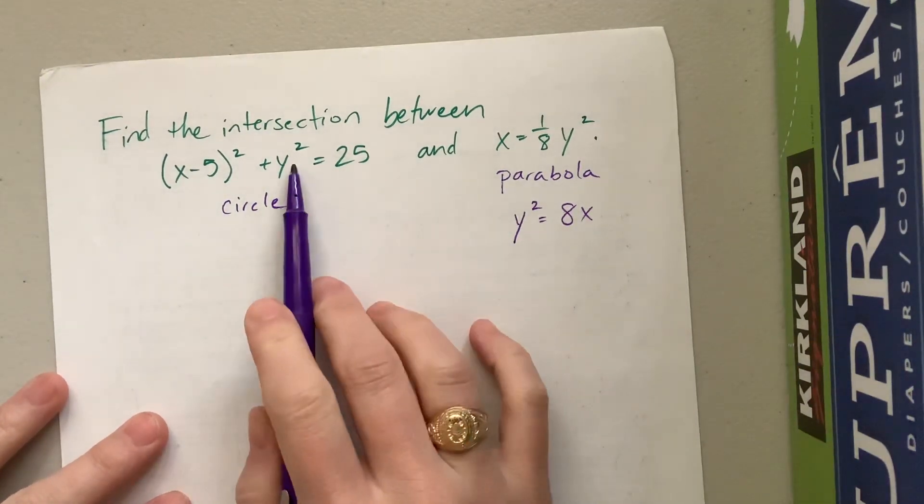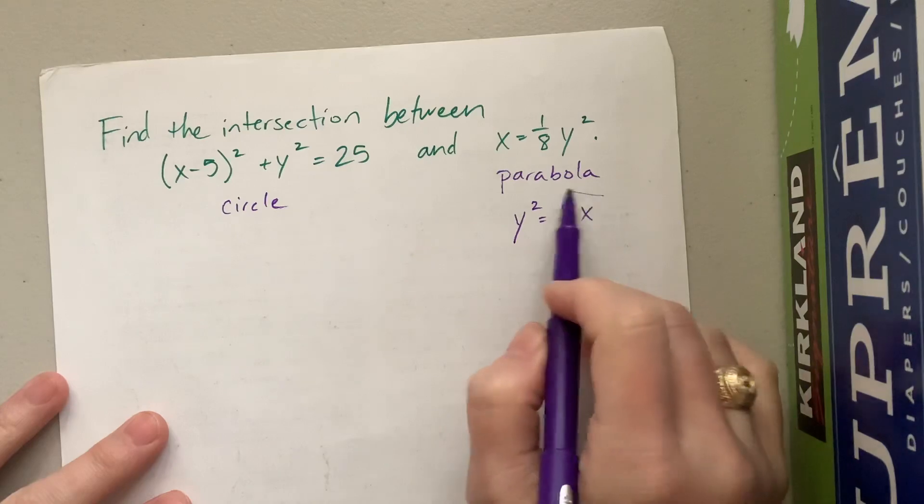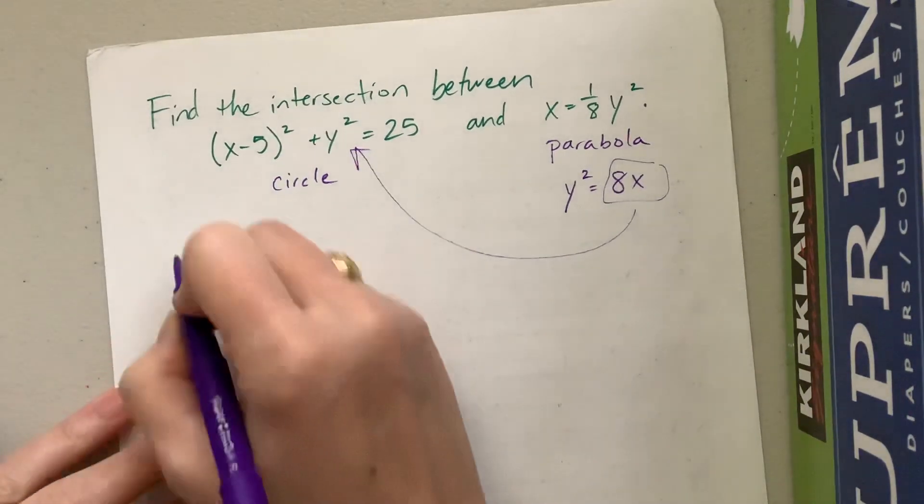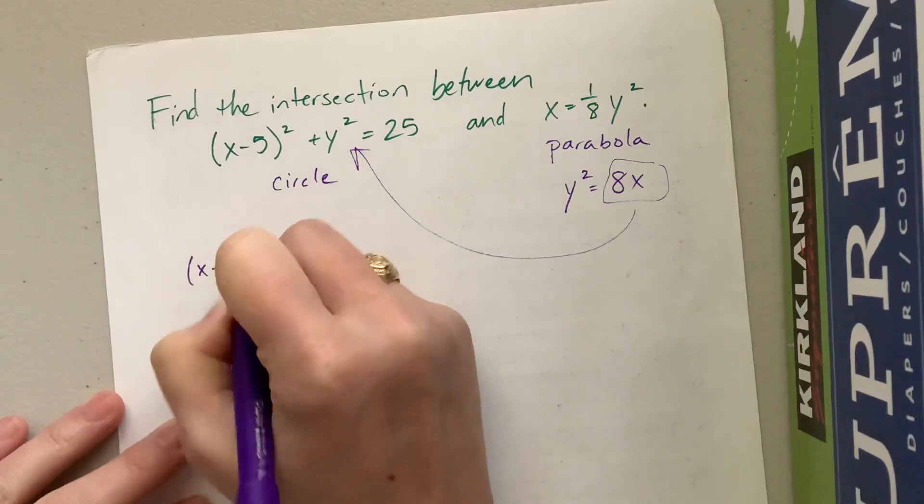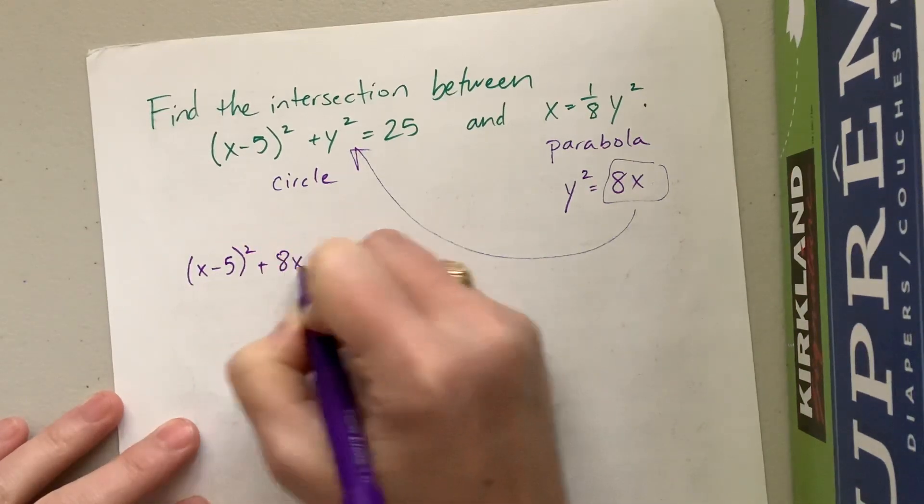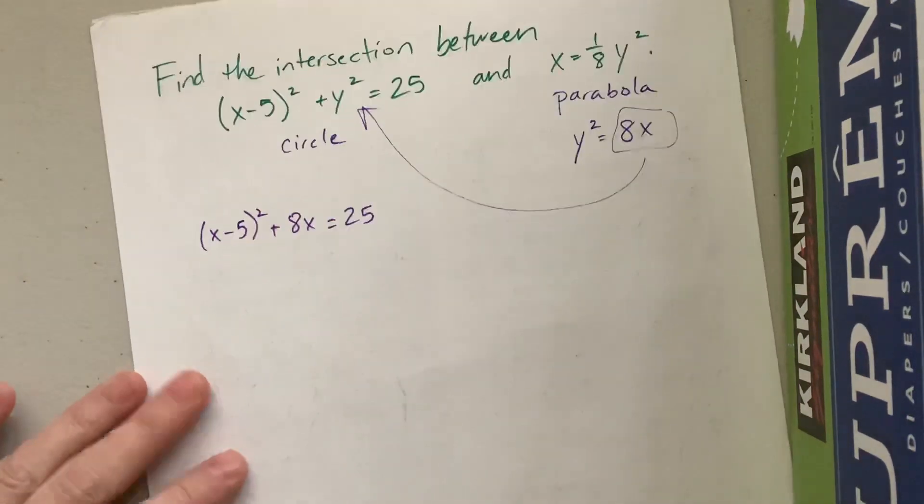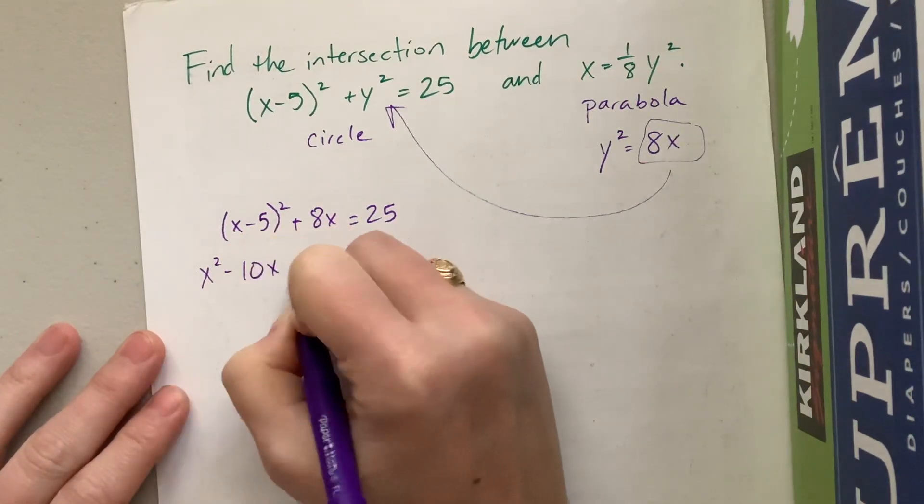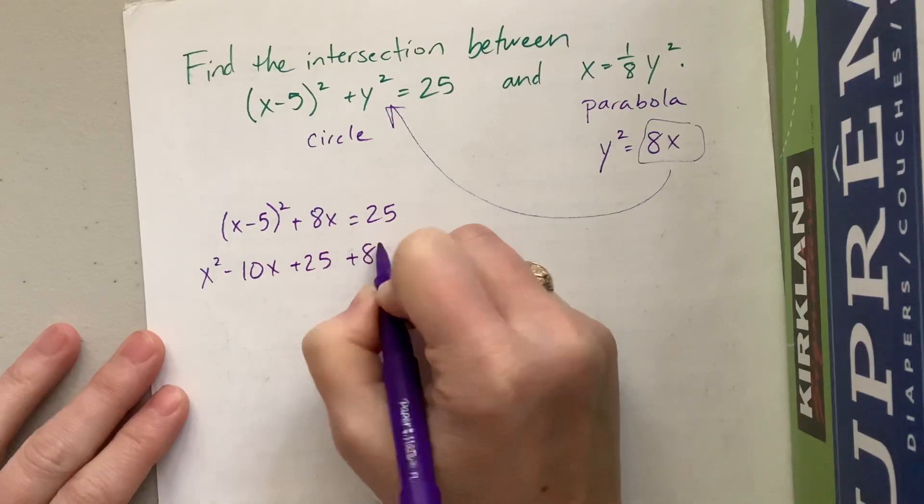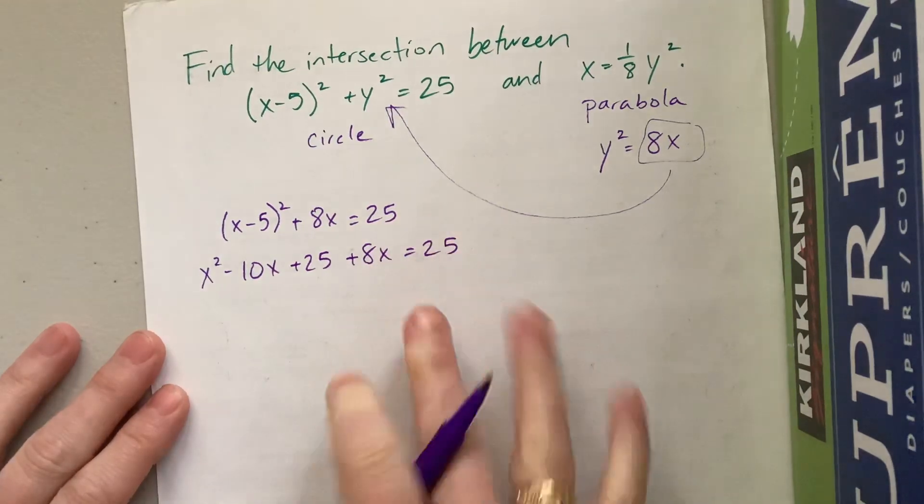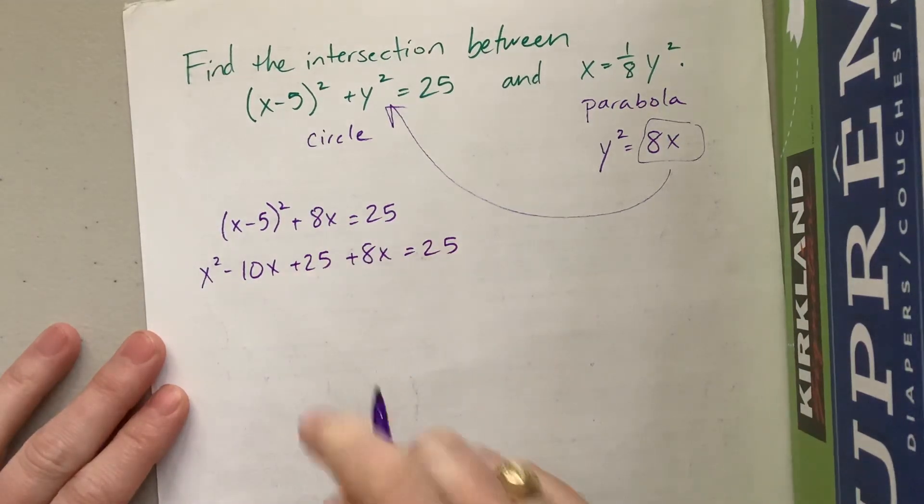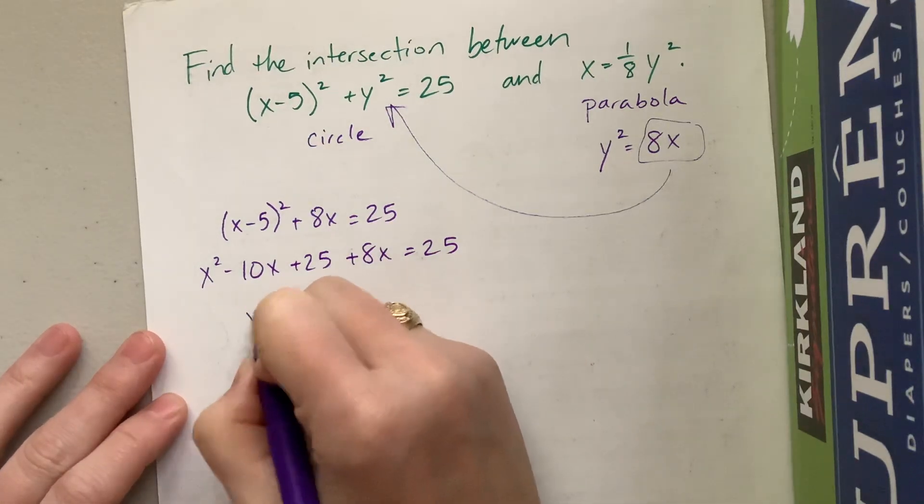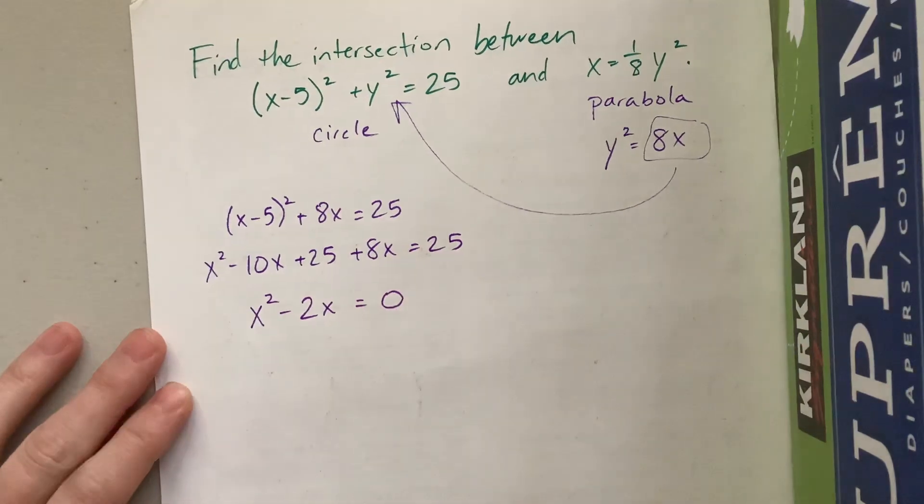So now I can come over here and I can take this and substitute this in wherever I had seen the y squared before. So I have (x - 5)² + 8x = 25. Well, now we need to clean this up. x² - 10x + 25 + 8x = 25. This is convenient that 25s cancel out on both sides. Negative 10 plus 8 is negative 2. So this becomes x² - 2x = 0.